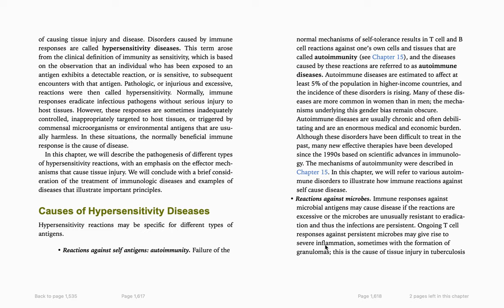Normally, immune responses eradicate infectious pathogens without serious injury to host tissue. However, these responses are sometimes inadequately controlled, inappropriately targeted to host tissue, or triggered by commensal microorganisms or environmental antigens that are usually harmless. In this situation, the normally beneficial immune response is the cause of disease. In this chapter we will describe the pathogenesis of different types of hypersensitivity reactions with an emphasis on the mechanisms that cause tissue injury.